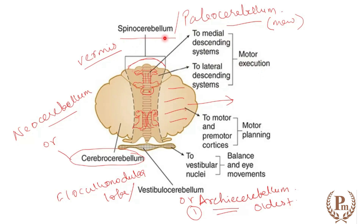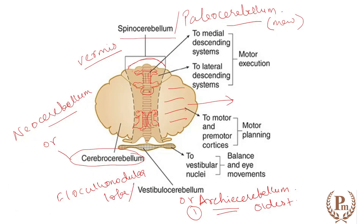The most lateral part has connections with the cerebral cortex — specifically the motor area, premotor area, supplementary motor area, and somatosensory area. Because of these connections, this lobe is called the cerebrocerebellum, also known as the neocerebellum. Phylogenetically: archicerebellum came first, then paleocerebellum, and the most recent in development is the neocerebellum.